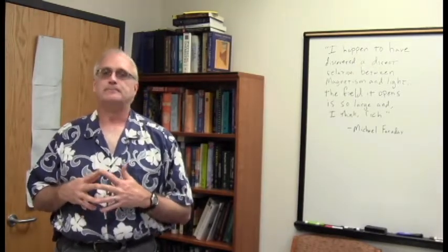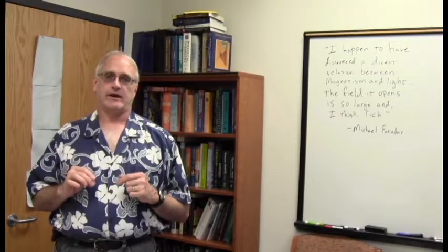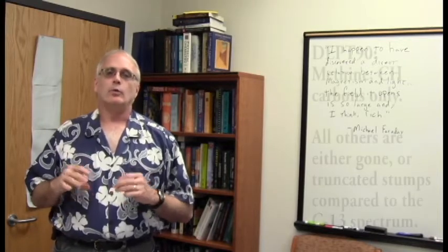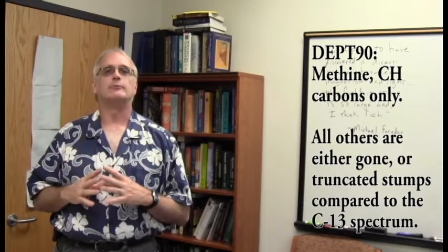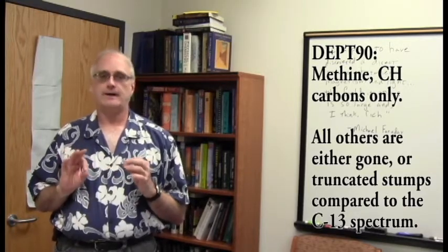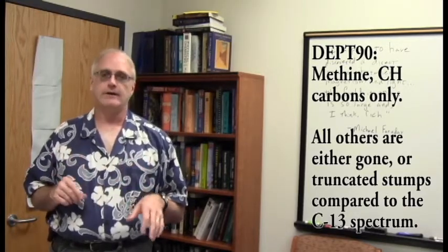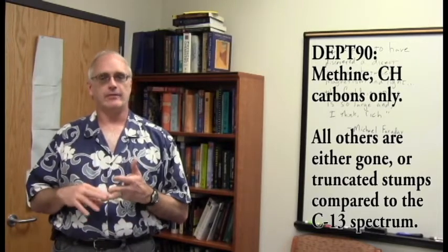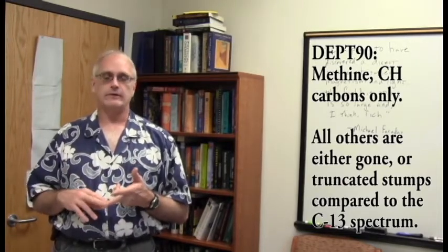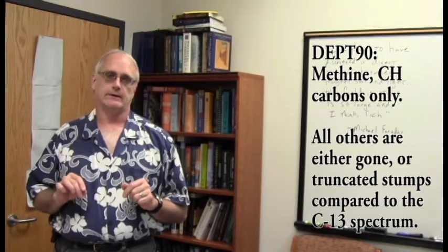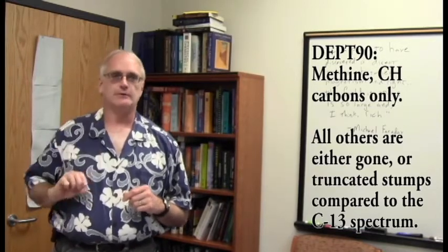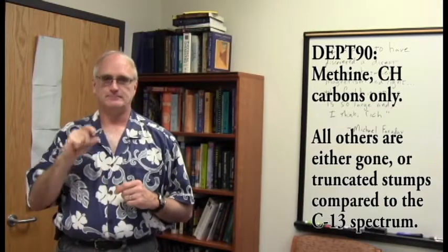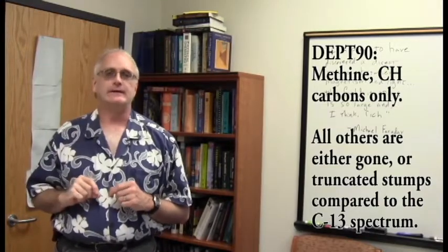Here's what they do. A DEPT-90 spectrum ideally will show you carbons that only have one proton attached, only the methine carbons. All of the others, your methyls, your methylenes, and your quaternaries, will either be gone completely, or they will be greatly reduced and be little stumps, little bumps, in the baseline.